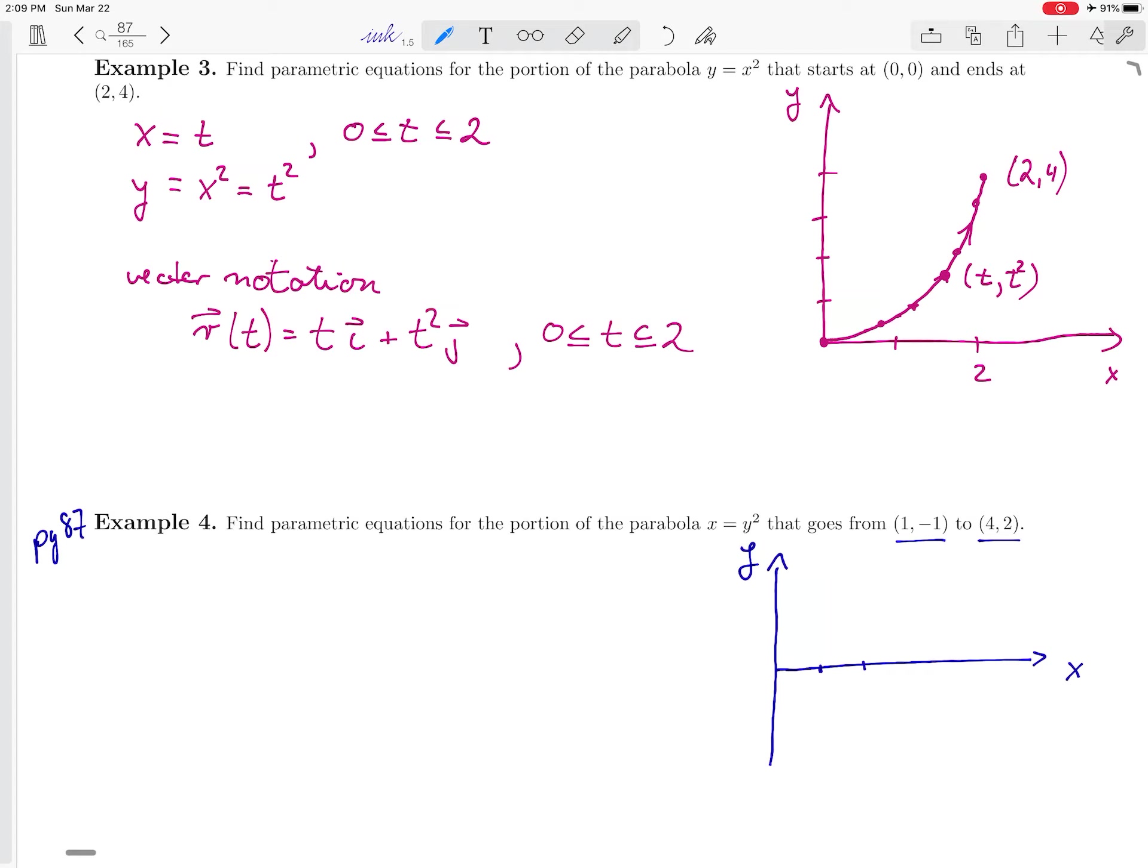So, 1, minus 1, so I have 1, 2, 3, 4 along the x-axis and then I'm going from minus 1 to 2 on the y-axis. So I'm starting here at 1, minus 1 and I'm ending at 4, 2.